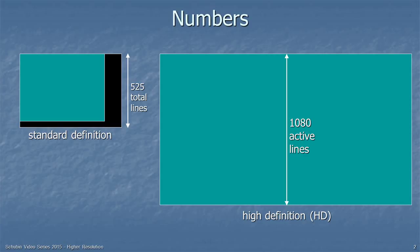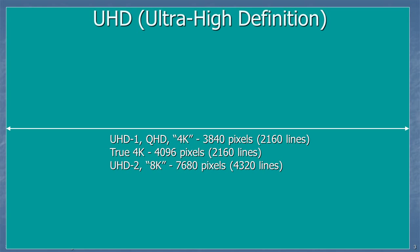In high definition, we stopped talking about total lines and instead started talking about the active lines — those carrying picture information. So we talk about 720 or 1080 active lines for HD. In ultra-high definition, we turn everything on its side. UHD1 is sometimes called QHD or quad high definition, or sometimes 4K, and that's 3840 pixels across by 2160 lines, which is twice HD. True 4K is sometimes referred to as 4096 pixels across, again in 2160 lines. And then UHD2, sometimes referred to as 8K, is 7680 pixels across by 4320 lines.